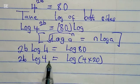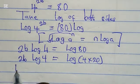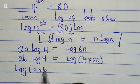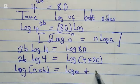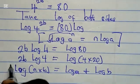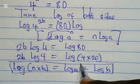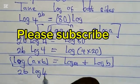Recalling the property of multiplication in logarithms: when you multiply two numbers, you separate it. If you have log(a × b), it equals log a plus log b. Using this property to simplify, we have 2b log 4...